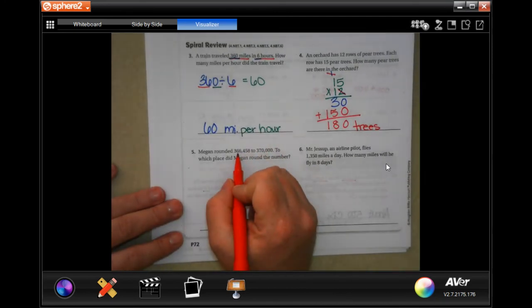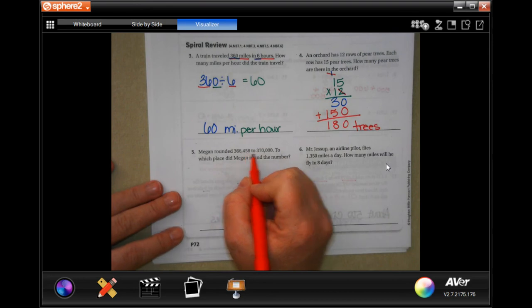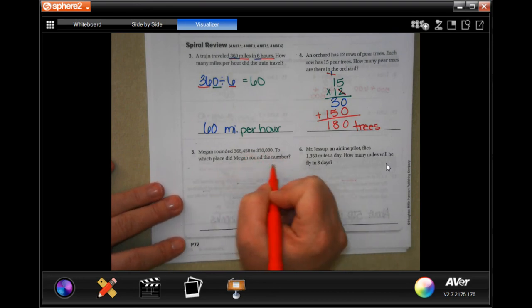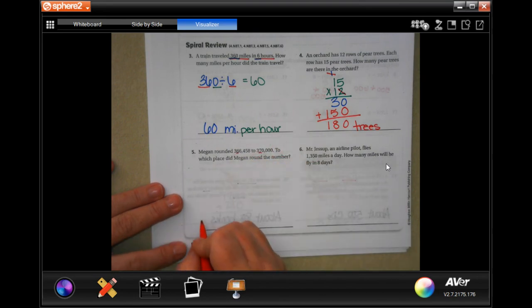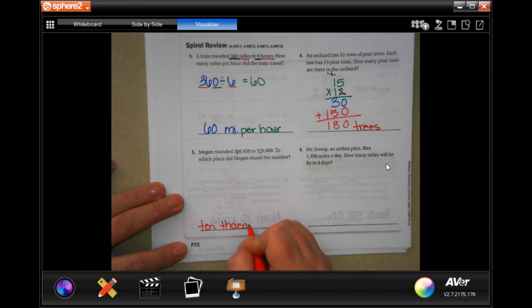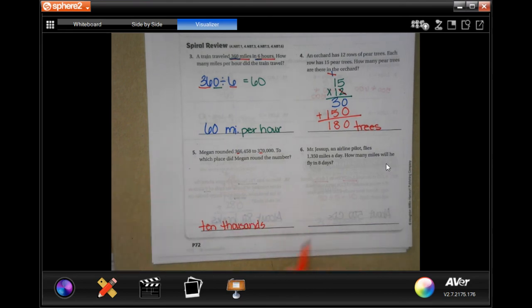Megan rounded 366,458 to 370,000. To which place did Megan round the number? Well, the first number that changed was the 10,000. There you go.